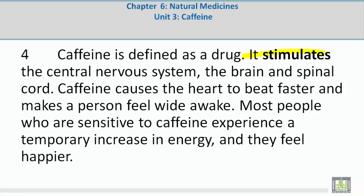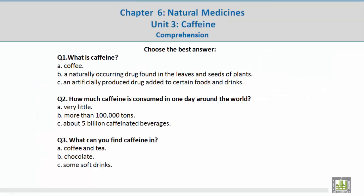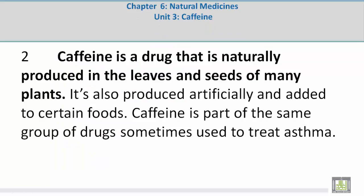Comprehension question 1: What is caffeine? The answer is B — a naturally occurring drug found in the leaves and seeds of plants. The supporting paragraph reads: 'Caffeine is a drug that is naturally produced in the leaves and seeds of many plants.'